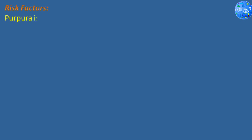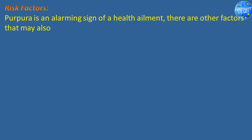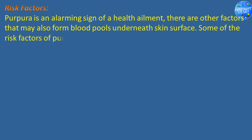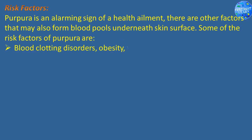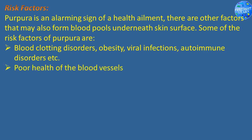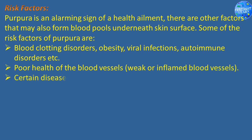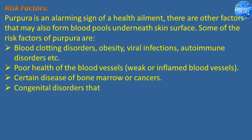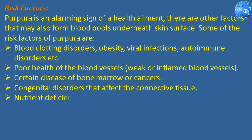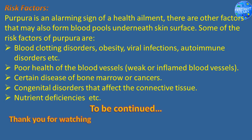Risk factors. Purpura is an alarming sign of a health ailment. There are other factors that may also form blood pools underneath the skin surface. Some of the risk factors of purpura are: blood clotting disorders, obesity, viral infections, autoimmune disorders, poor health of the blood vessels, weak or inflamed blood vessels, certain diseases of the bone marrow or cancers, congenital disorders that affect the connective tissue, and nutrient deficiencies. To be continued. Thank you for watching.